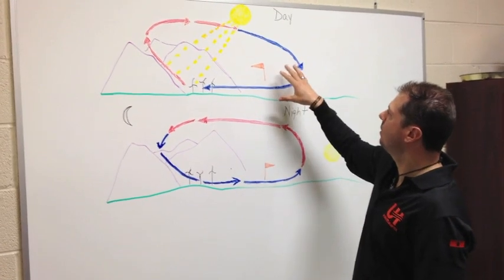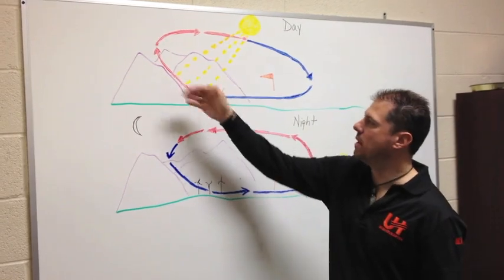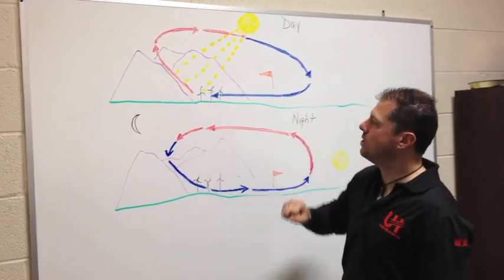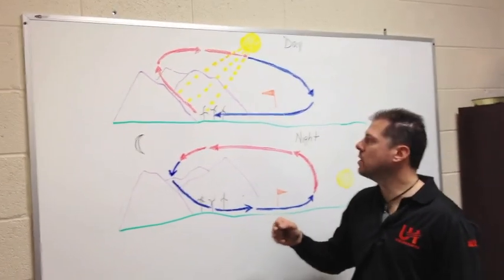So you can see from the wind sock here that the wind is coming from the valley and going up into the mountain. In Spanish Fork, we also have some windmills that are placed there because this is a very consistent wind pattern that we experience.